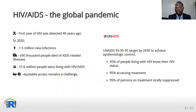Forty years have passed since the first case of HIV AIDS, yet in the year 2020, 1.5 million people were newly infected with the virus, 690,000 people died of AIDS-related illnesses, and approximately 37.6 million people were living with HIV AIDS.